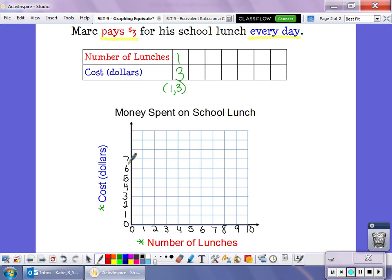And we're going to label our y axis here. Six, seven, eight, nine, ten. And remember, because this is labeled number of lunches, this is our x value. Because our side up here says cost, that's our y value.